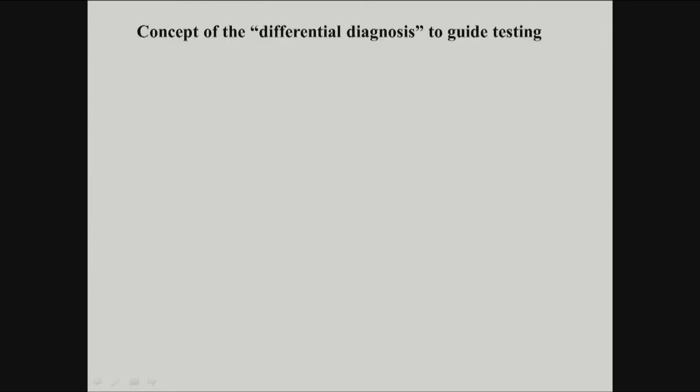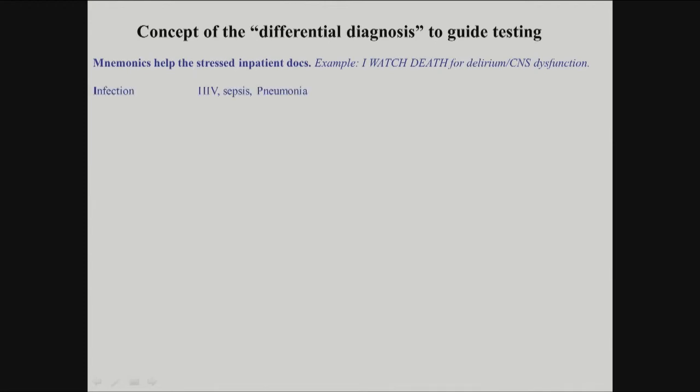The concept of the differential diagnosis — if you've seen House or ER, this is the kind of thing people talk about. For delirium or central nervous system dysfunction, it can be so complex that it helps to have a mnemonic. A lot of docs actually use these to make sure they don't forget a major category. 'I WATCH DEATH' is used a lot in the ICU for delirium or CNS dysfunction. I stands for infection.